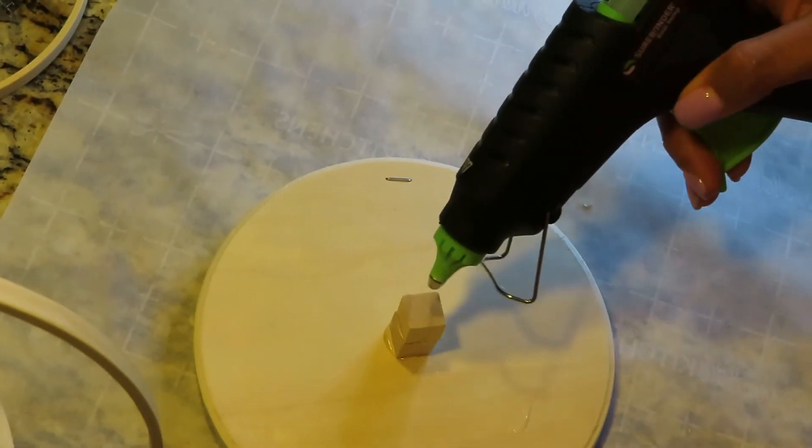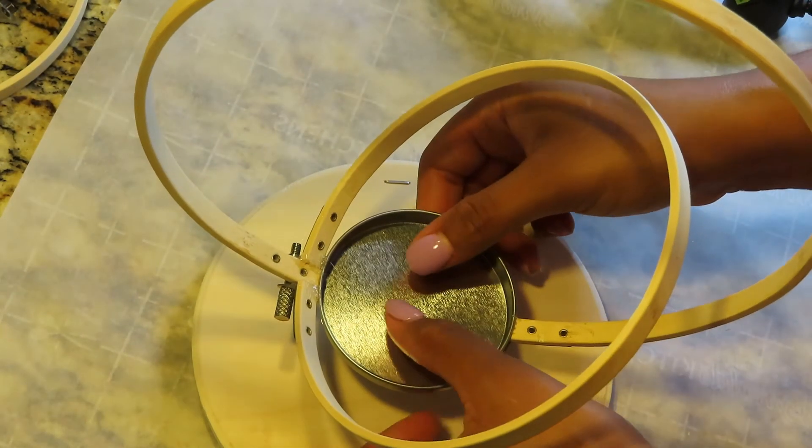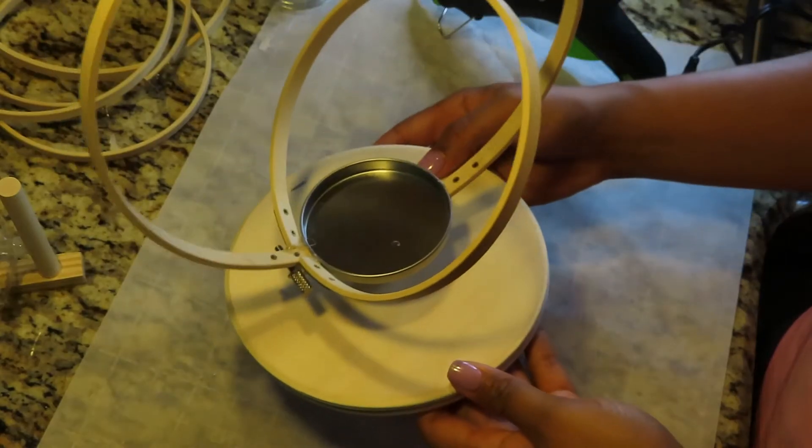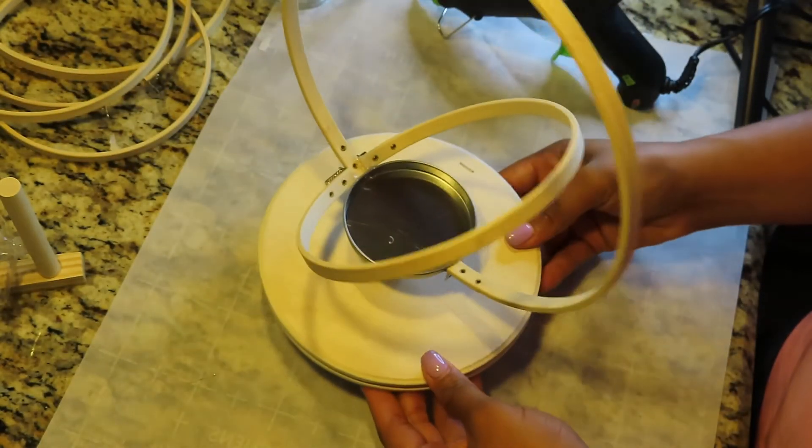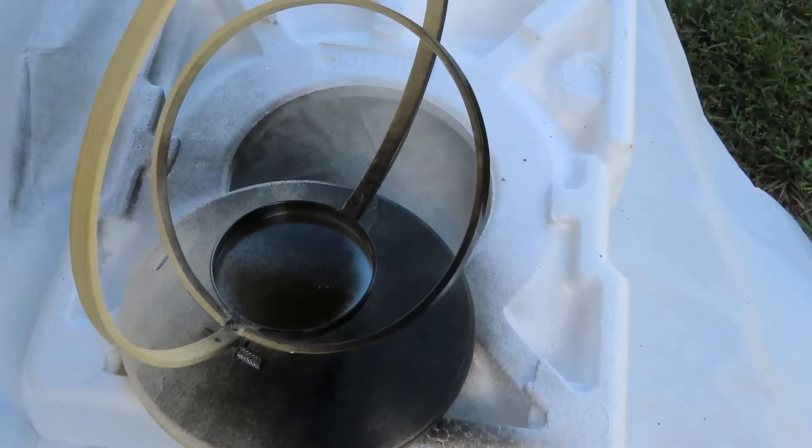Once that was finished, I took some glue and placed it on top of the block and attached the piece to it. That's what it looked like before painting. Alright, let's paint.